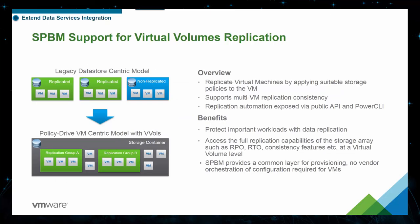VMware is working with a broad range of storage partners to introduce support for VVol replication. Unlike legacy array-based replication that required explicit placement on specific data stores to ensure a VM was replicated, VVol replication provides fine-grained control over VM replication. Vendor-specific replication capabilities are advertised up to vSphere via VASA. Virtual infrastructure administrators create VM storage policies containing replication capabilities from the storage system. When VMs are provisioned, the user selects a policy containing the replication capabilities, chooses a compatible data store, chooses a replication group to support multi-VM consistency, and then completes the provisioning. The replication groups are advertised by the VASA provider, and the storage system can also advertise a special automatic replication group that places the VM into an empty replication group by itself to support per-VM replication.